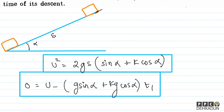Now let's talk about the downward journey. At this moment, the initial speed is zero. The body moves down the incline, covering the same distance s. The force mg sin alpha acts down the incline. Since the body moves down, friction acts up the incline, opposing the motion.